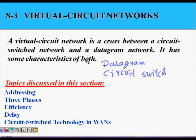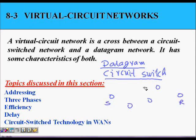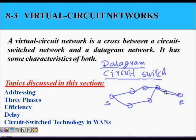In this lecture we are going to learn about virtual circuit networks. We have already studied datagram networks and circuit switched networks. In a datagram network, if there is a sender and a receiver, the packets or datagrams being sent are all independent of each other, which means they can take different paths. Packet one might take one path, packet two might take another path, so delays can be different, they can be out of order, and you have no guarantee of service.